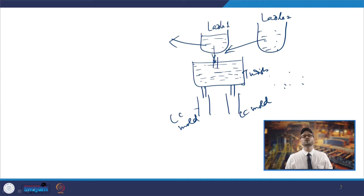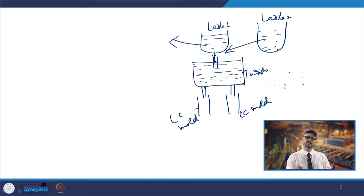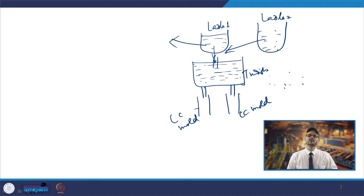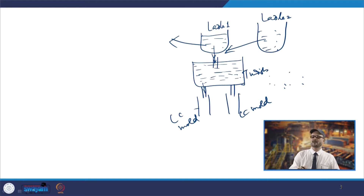The new grade of steel coming out will be of neither the old composition nor the new composition, but somewhere in between. Initially there will be a large amount from the old ladle and a smaller amount from the new ladle. Slowly the old ladle steel depletes and the new ladle steel replaces it.